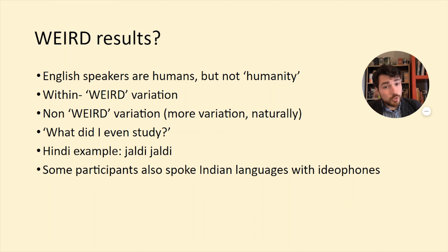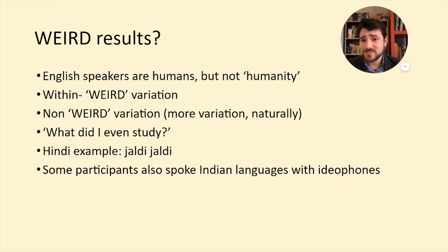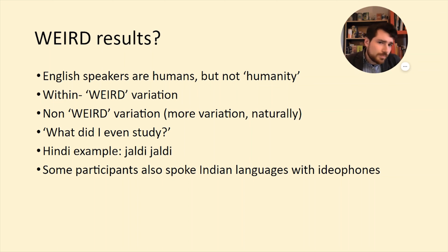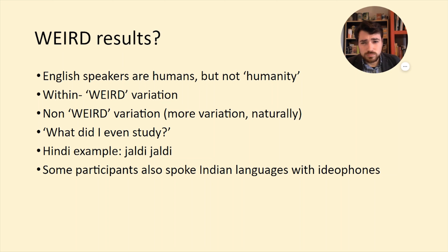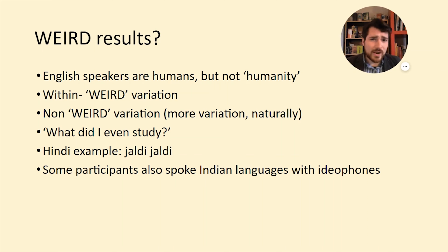Of course, English speakers are humans, but they're not all of humanity. Is there anything unusual about my results? English speakers don't represent all speakers of even European languages. So it's perhaps extra unusual in a sense. There's variation within WEIRD — a German speaker is not the same as an English speaker, or an Italian, or Spanish speaker. We don't even know exactly what WEIRD is: Western, Educated, Industrialized, Rich, and Democratic — but there are lots of border cases. It would be great to get a much more representative sample rather than relying only on English speakers.